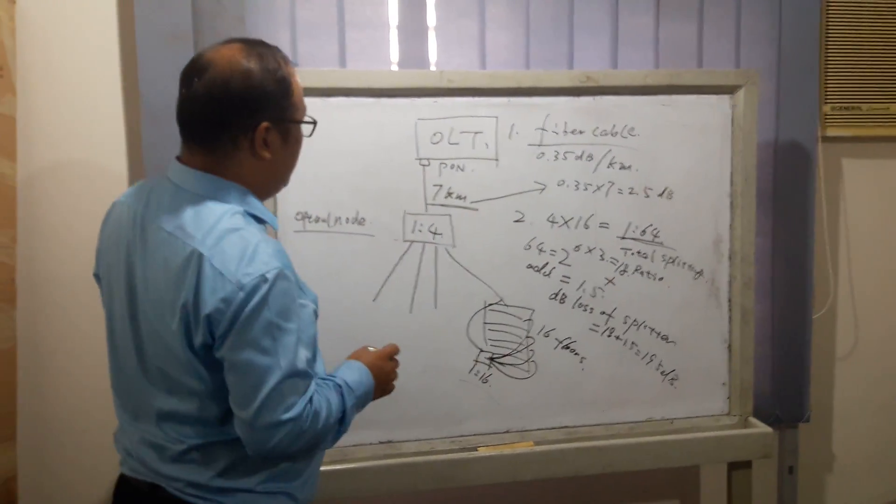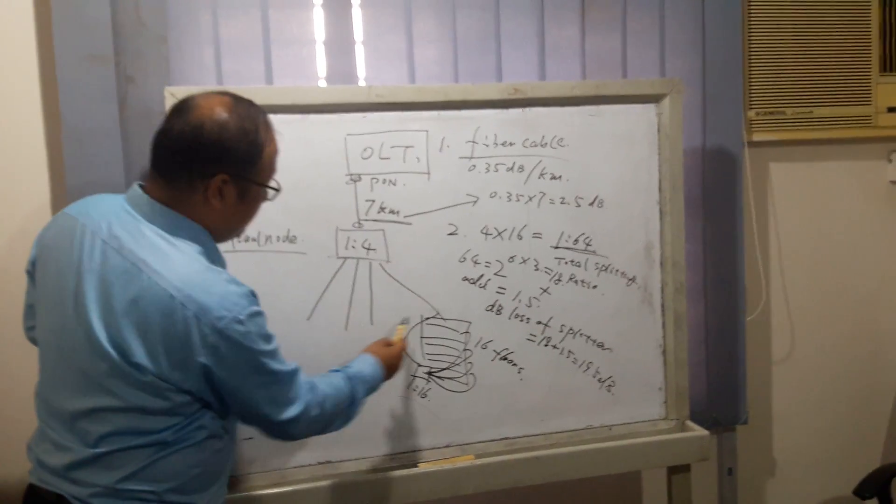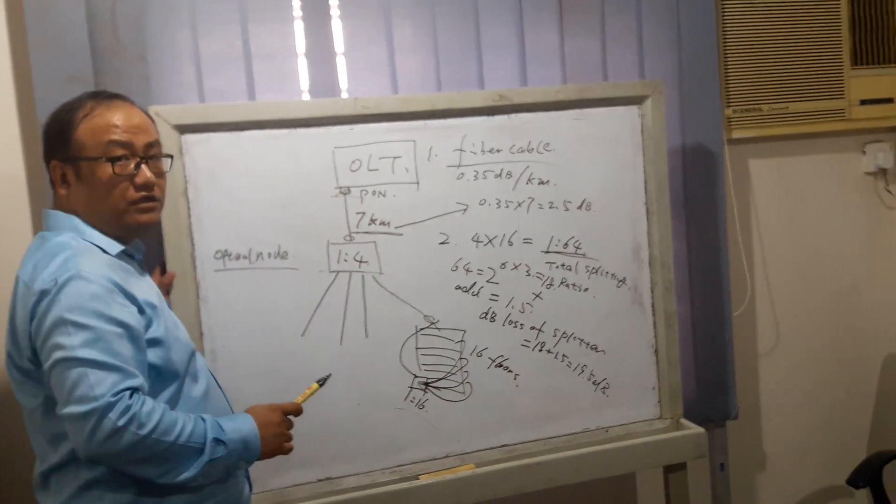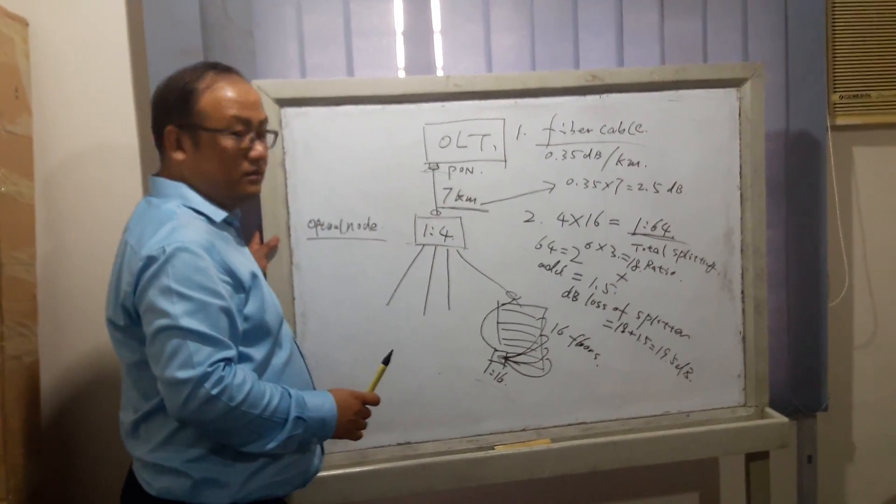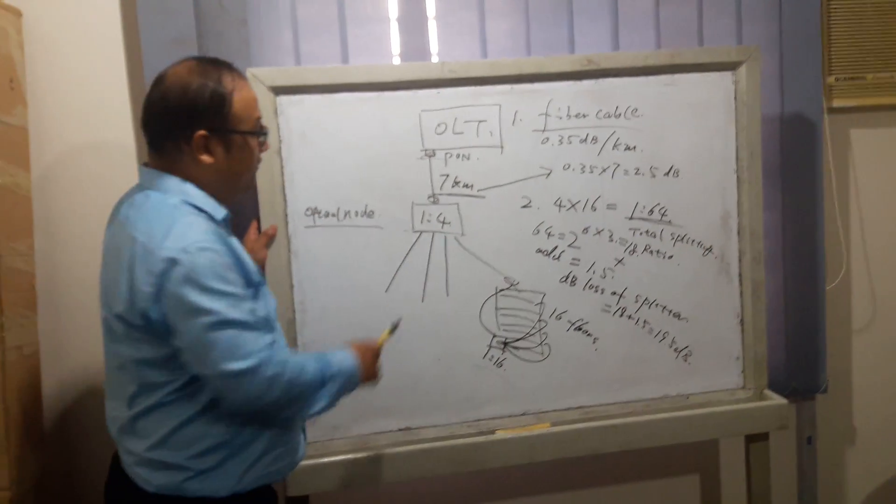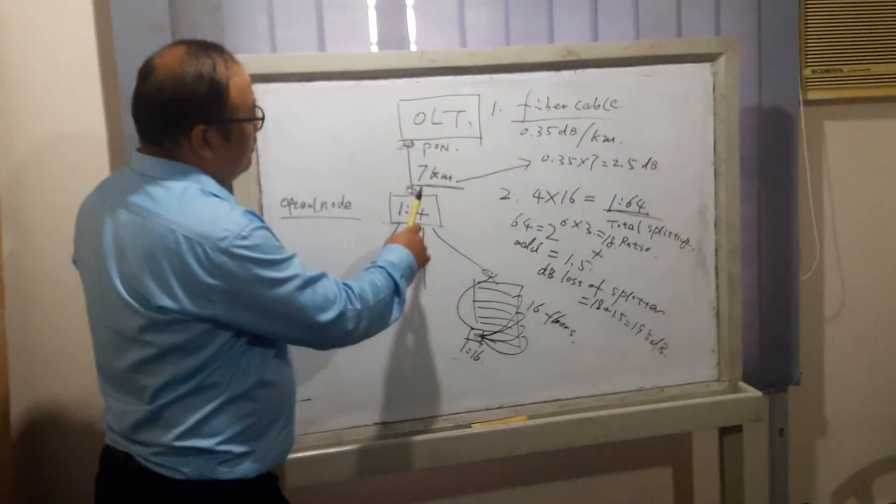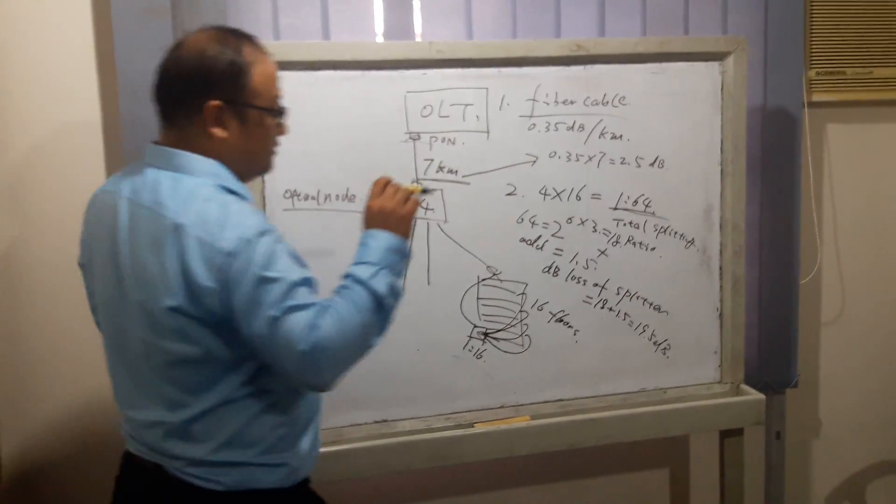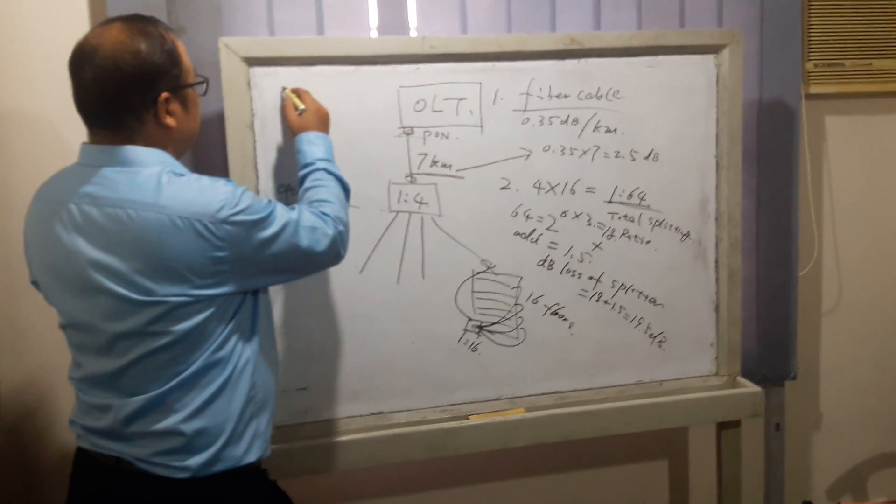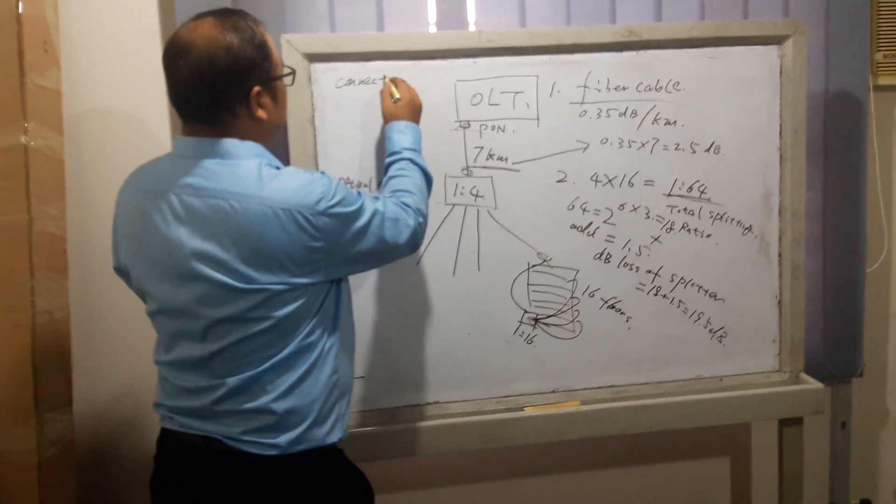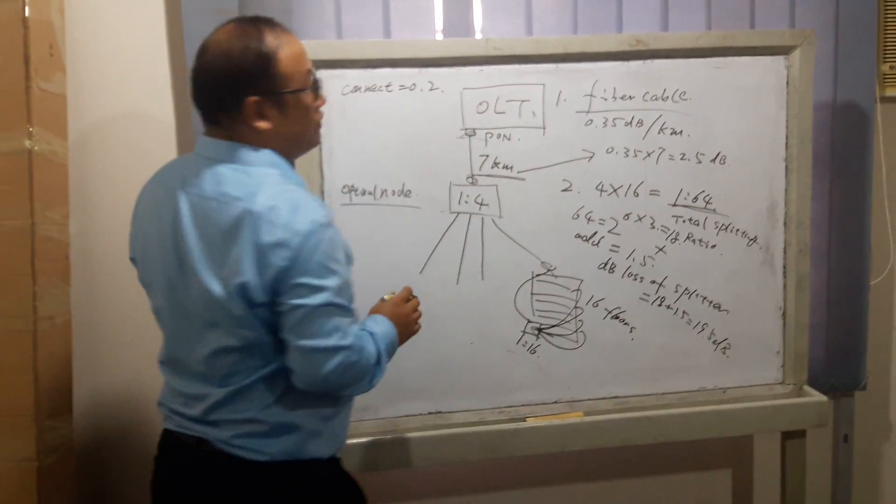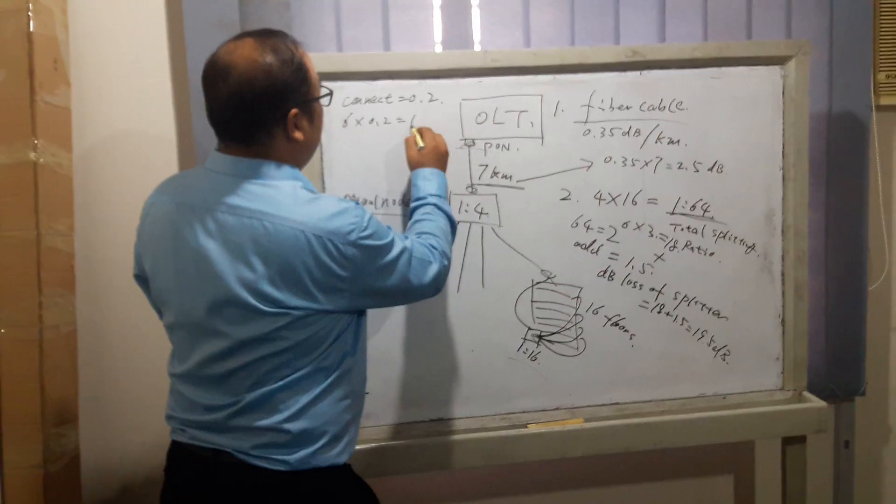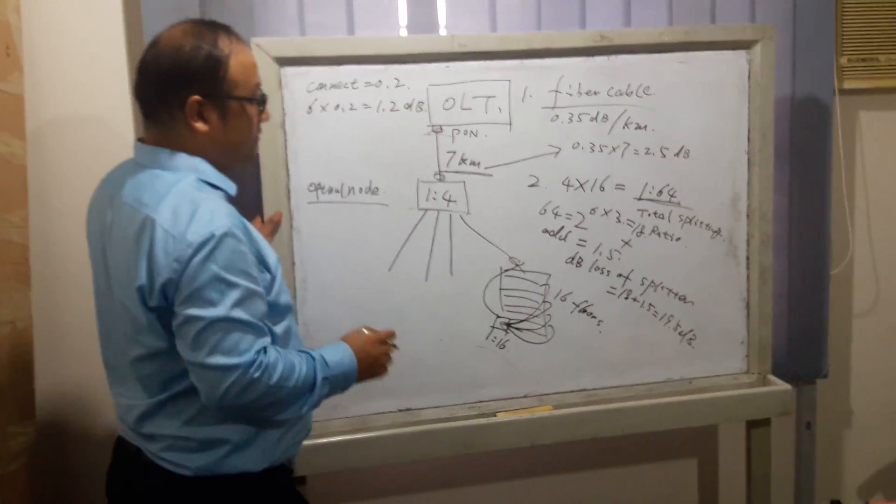The third part is the connectors. The first connector is the fiber to OLT PON port optical module. The second is the first splitter input. We count the whole distribution system as about 6 connectors. Each connector has 0.2 dB loss, so 6 connectors total 1.2 dB.